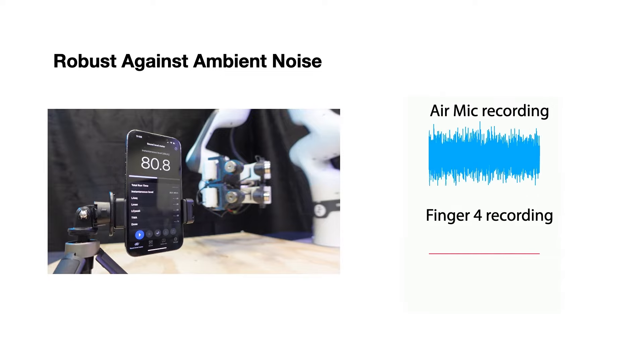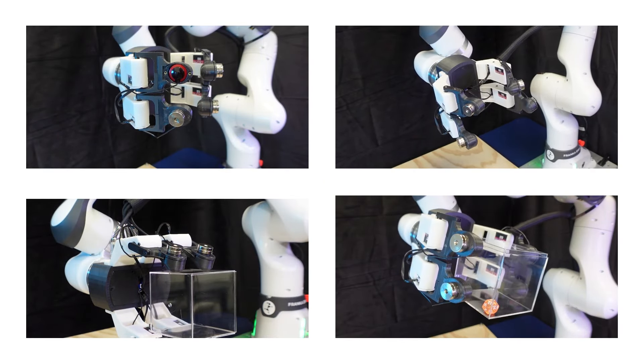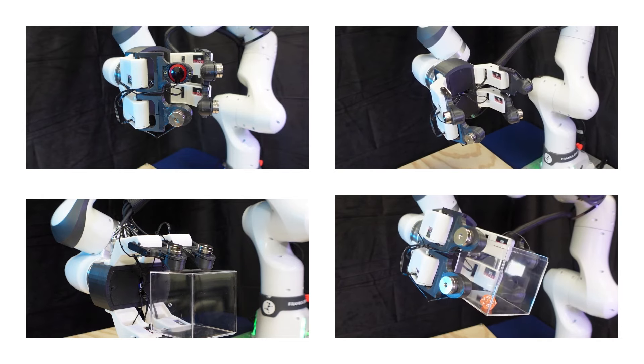Our robot has a strong resistance against ambient noises and only focuses on vibration signals through physical contact. This ensures high quality and reliable sensing data under challenging environmental conditions. Our entire robot hand costs $215 with commercially available components and 3D printing.